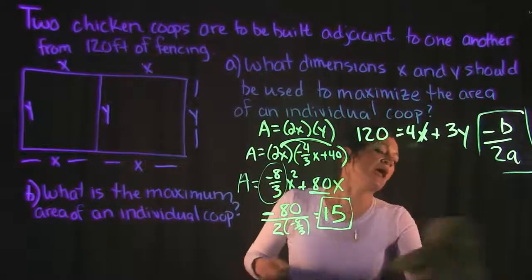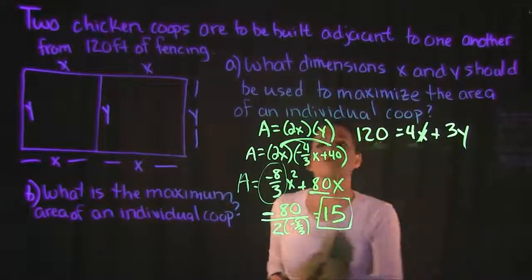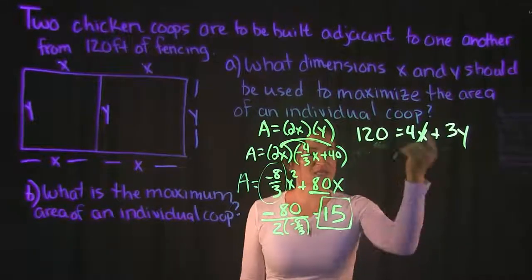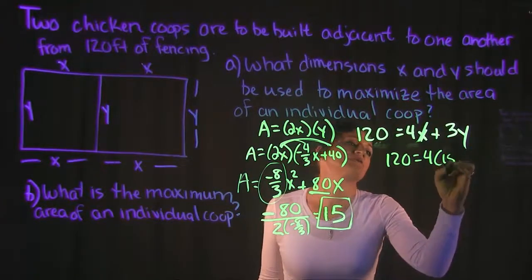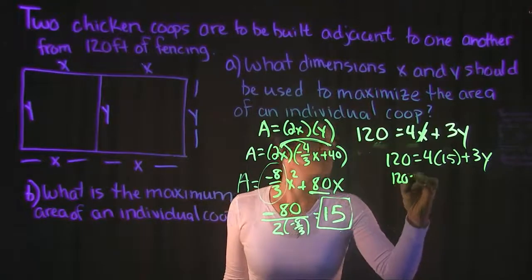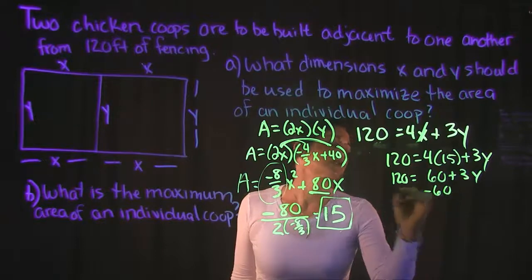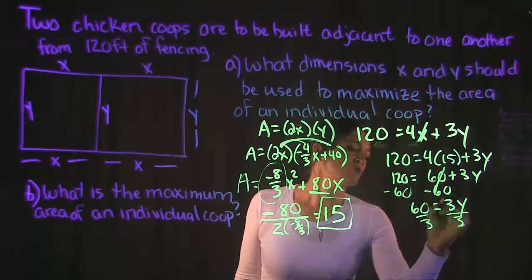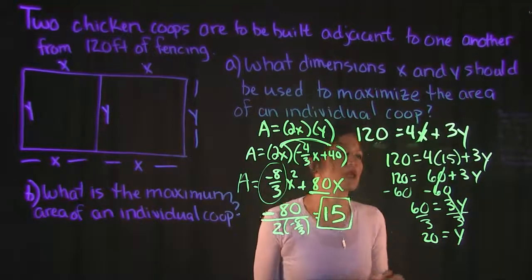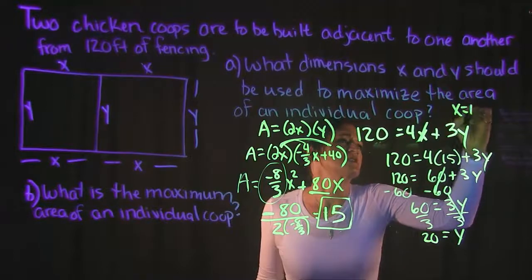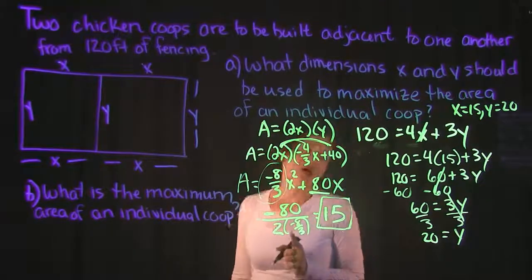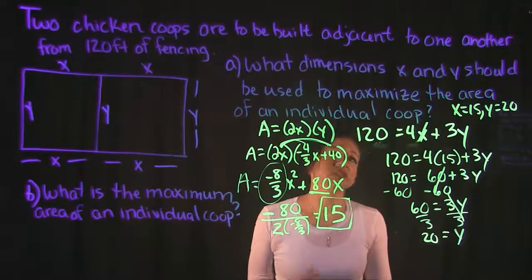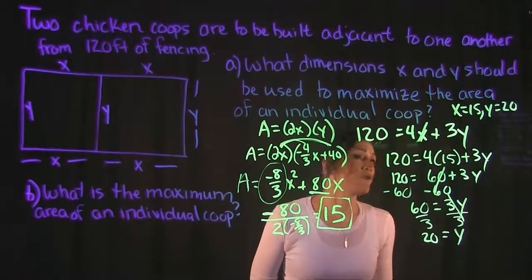Now that we know X equals 15, we can find Y by plugging back into the perimeter equation: 120 equals 4 times 15 plus 3Y. That gives 120 equals 60 plus 3Y; subtracting 60 from both sides gives 60 equals 3Y, so Y equals 20. This answers part A: X equals 15 feet and Y equals 20 feet are the dimensions that maximize the area of an individual coop.